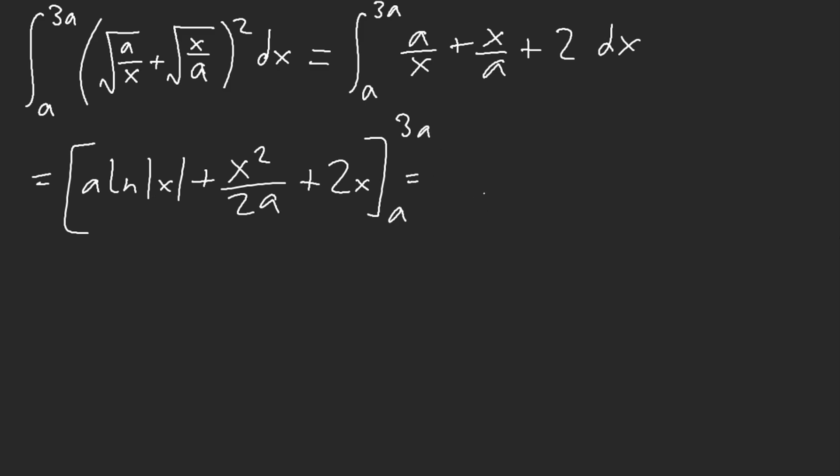And now we have a ln of, what, this is 3 technically because I'm computing these two together, plus for x squared we have 9a squared minus a squared over 2a, and then plus, and then we have 4a.